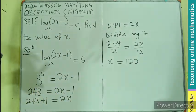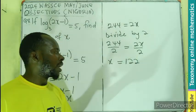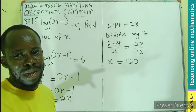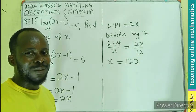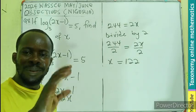So the value of x in here is going to be 122. I'm sure this is the quick one. Alright, thanks for watching. Like, share and comment. Bye-bye.